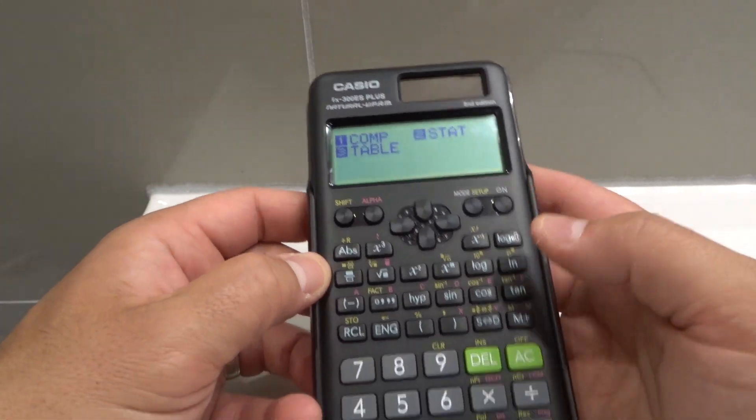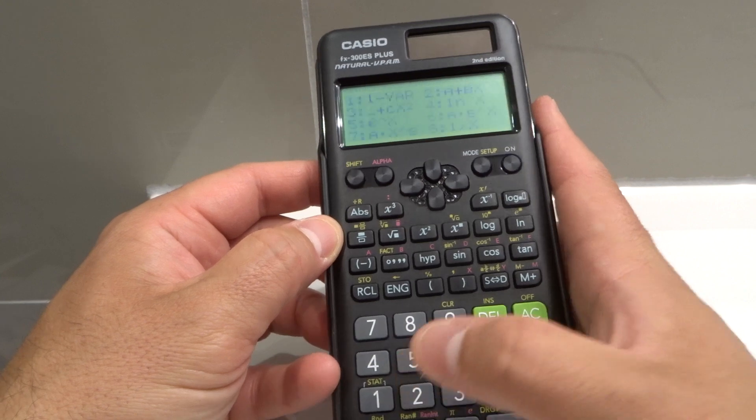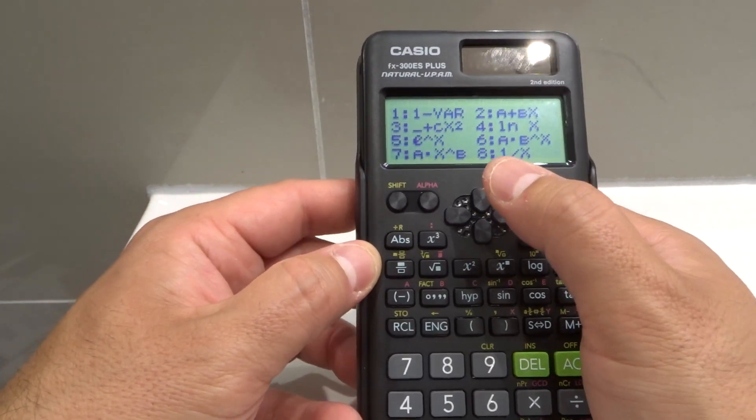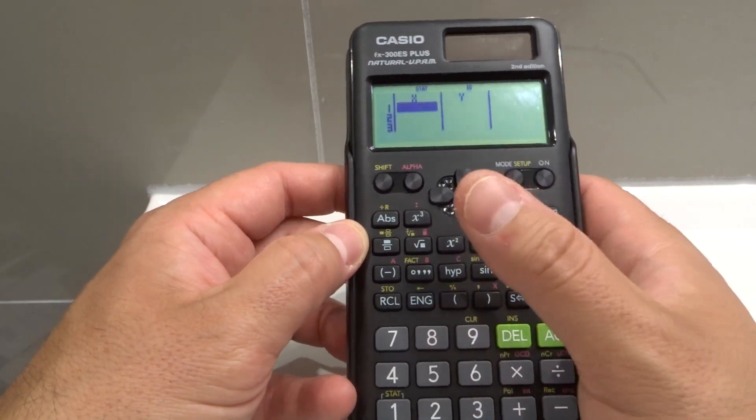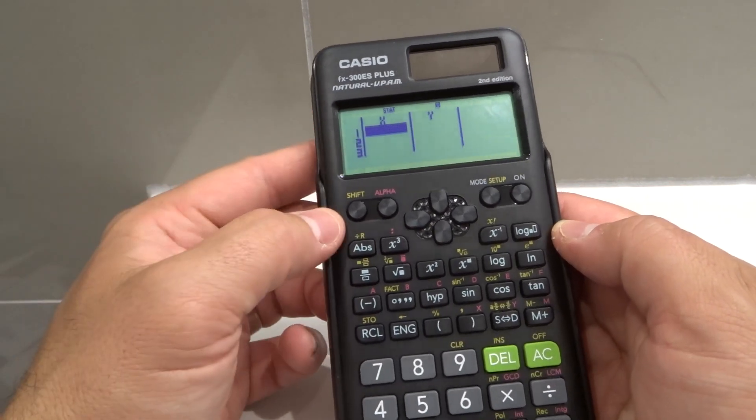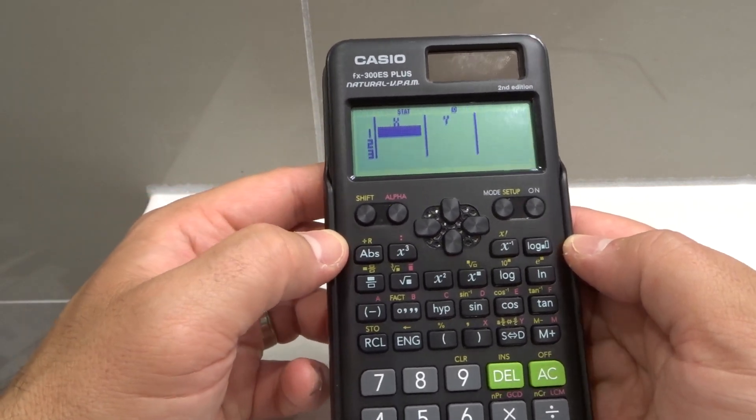And that's it. You just choose the number. So if I want stat, I would push two and it brings me to the stat. And then you choose the number like number eight, and then you can input your values here. Very, very, very simple, really easy to change the mode on a Casio scientific calculator.